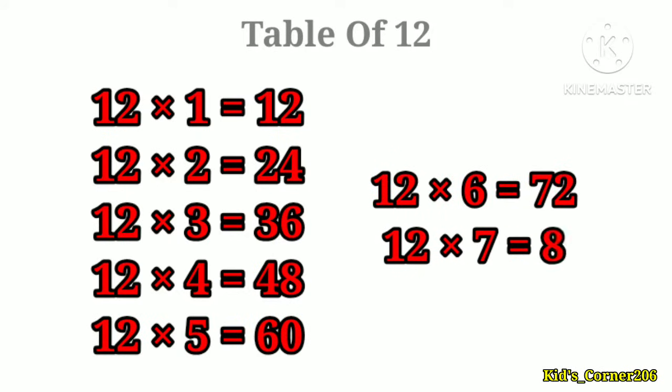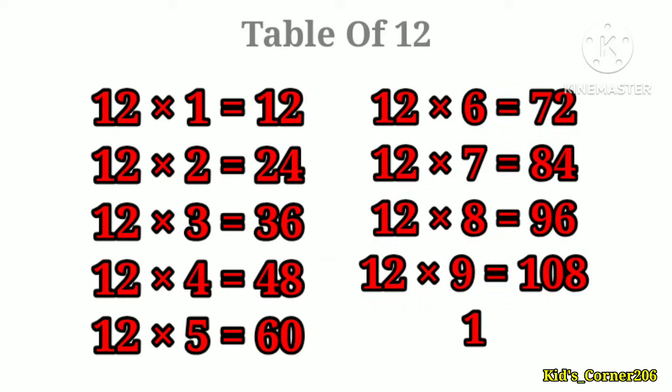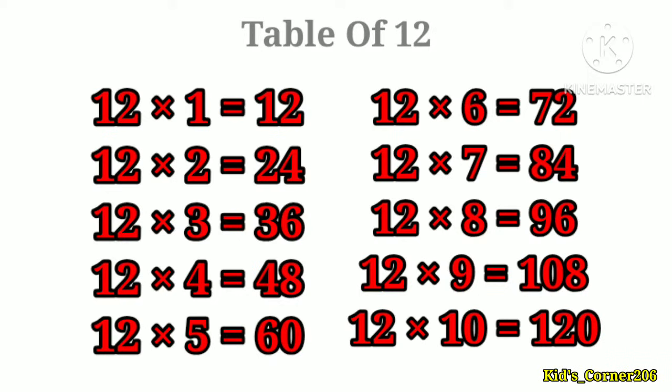12 sixes are 72, 12 sevens are 84, 12 eights are 96, 12 nines are 108, 12 tens are 120.